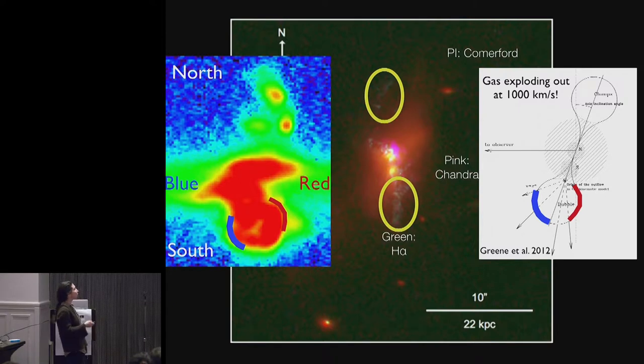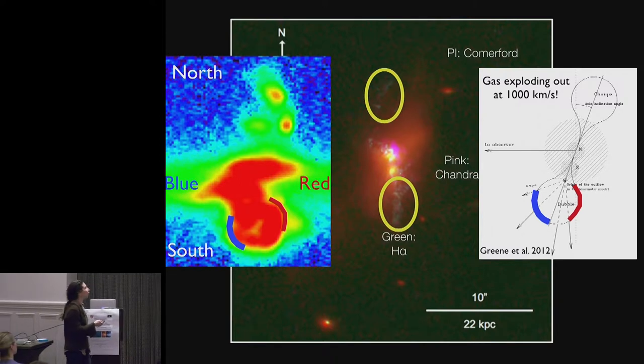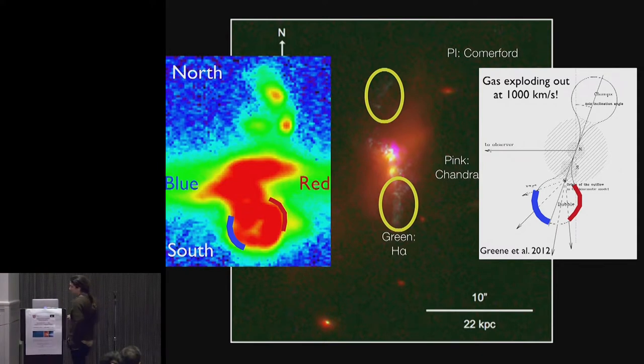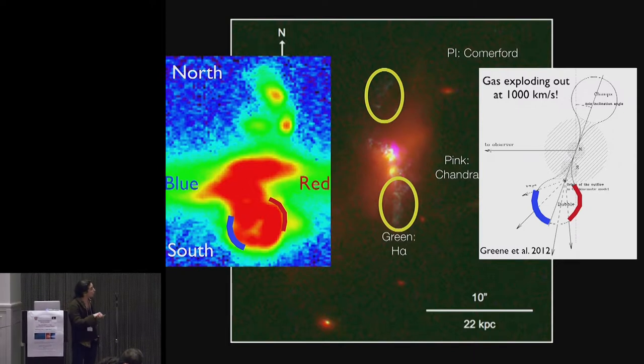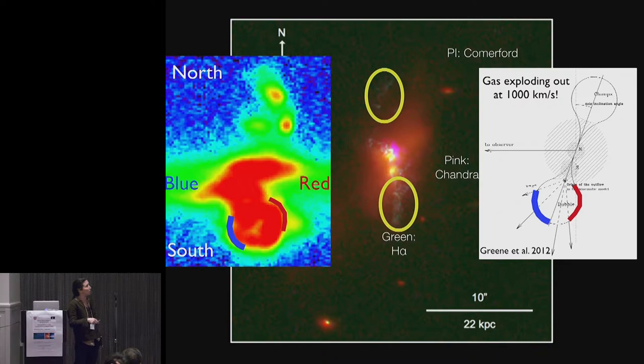And so in this particular case, we're pretty sure that we're seeing a giant outflow blown by this accreting supermassive black hole without the assistance of jets. So maybe it's radiation pressure on dust, maybe it's just thermal heating of the gas, but it does seem to be blowing this large wind.